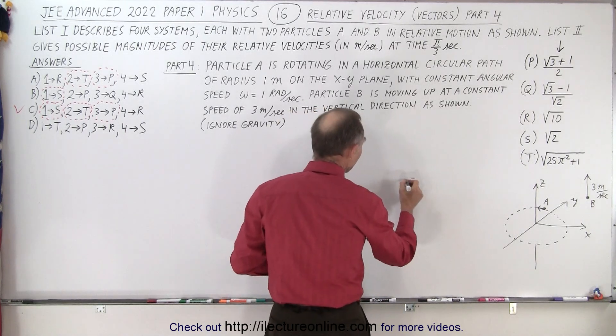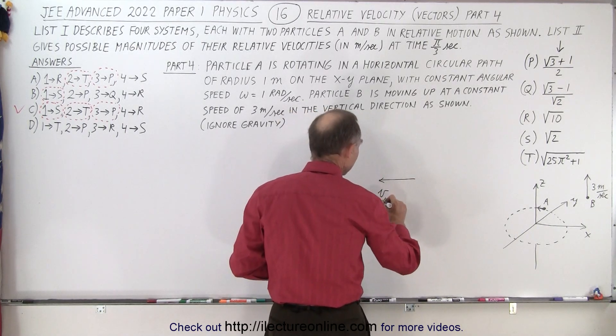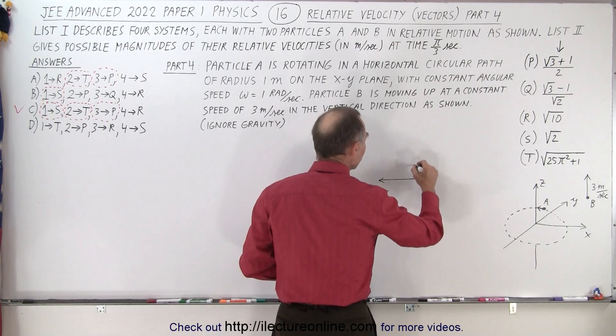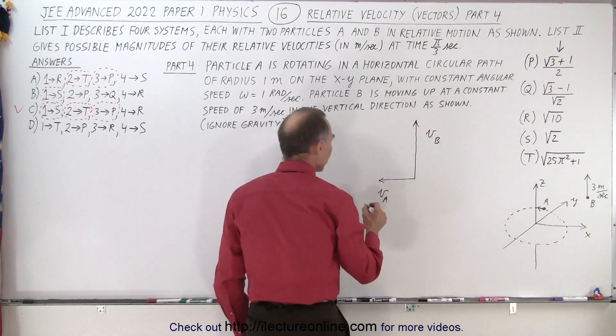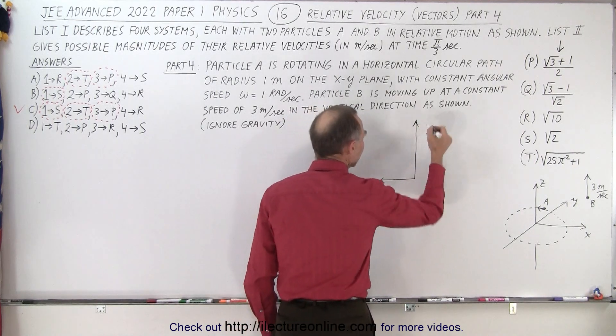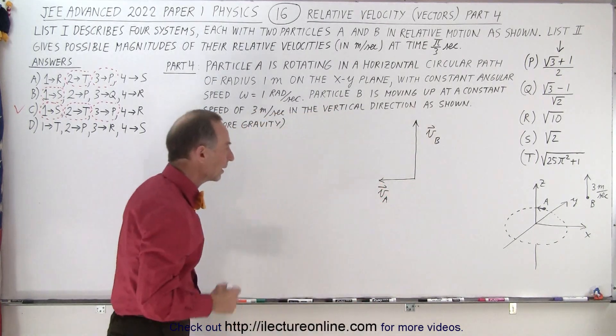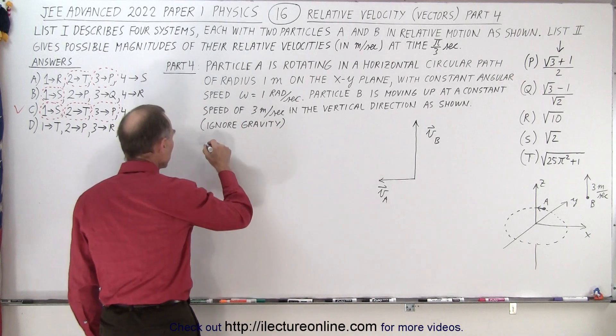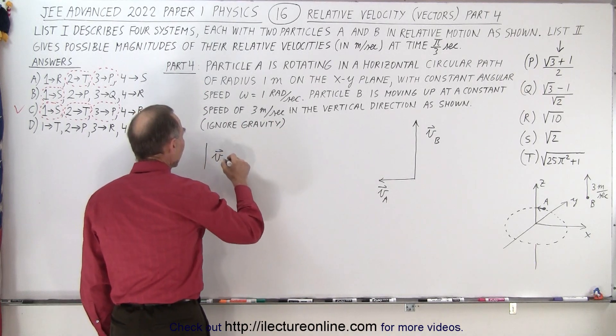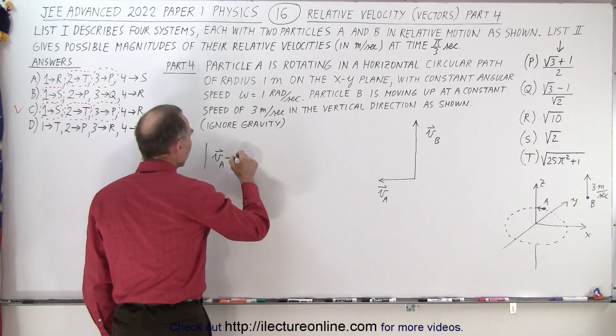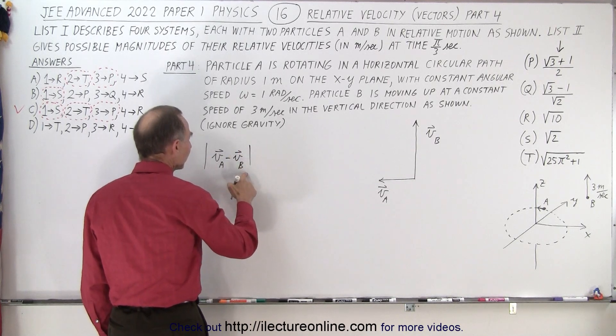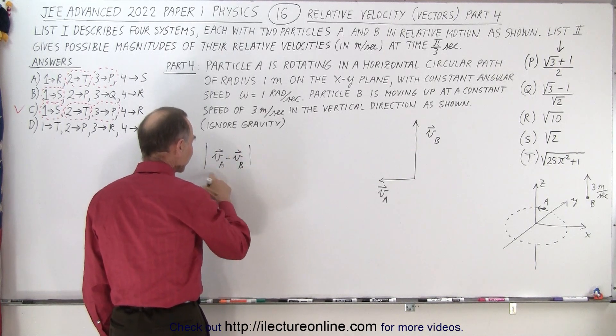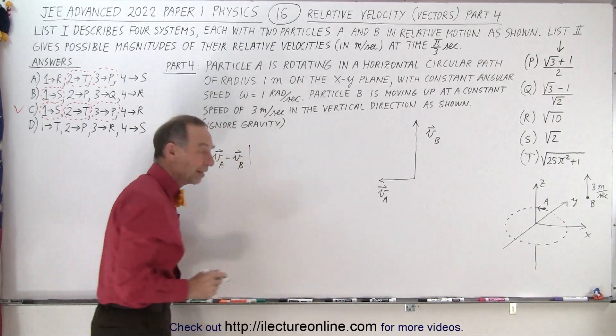So essentially, we can say that this here is velocity A and this here will be velocity B. And so if we want to make that into vectors, we can write it like that. Then, of course, what we want to do is we want to take the magnitude of the difference of the two vectors. So we're going to subtract vector B from vector A or velocity B from velocity A and then take the absolute value sign of that.